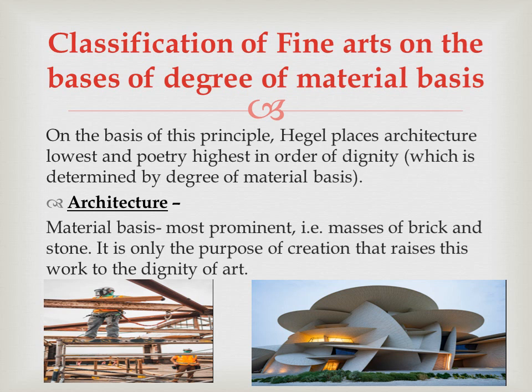The classification of fine arts on the basis of degree of material basis used: Hegel places architecture lowest and poetry highest in order of dignity, which is determined by the degree of material basis. Architecture is first — the material basis used in architecture is most prominent, that is, masses of brick and stone. It is only the purpose of creation that raises this work to the dignity of art.